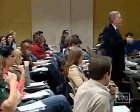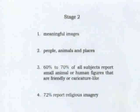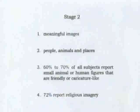Many conditions can produce these patterns — psychotropics can do it. In stage two, meaningful images emerge, and these can be very idiosyncratic. You then have peoples, animals, and places. 60% to 70% of all subjects report small animals or human figures that are friendly or caricature-like. In some cultures this may be called the totem, the spirit guide, the protectorate. And 72% report religious imagery, which doesn't change that much with most famous psychotropic compounds.